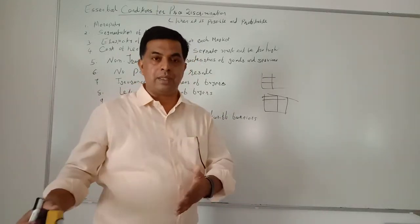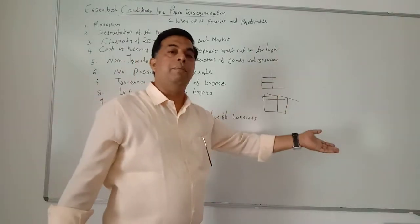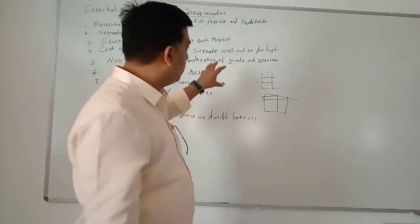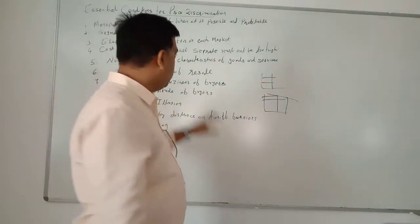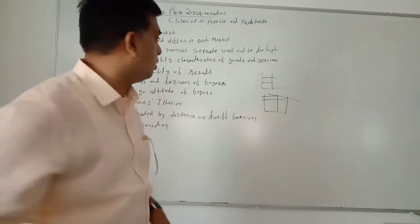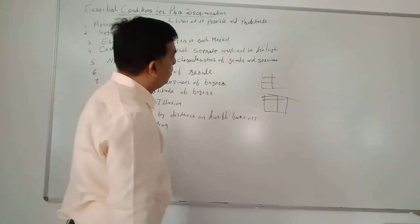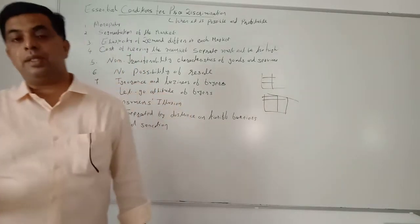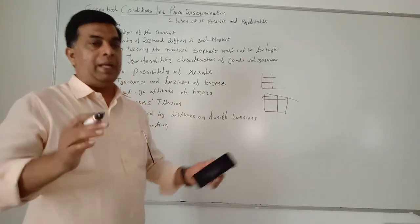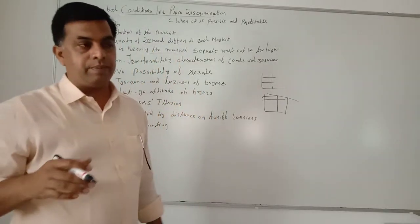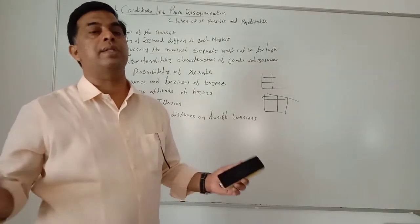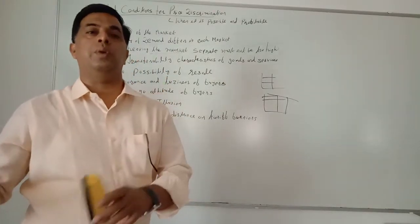Price discrimination is only possible when elasticity is different in different markets. If elasticity is the same, price discrimination is not possible. The fourth condition: the cost of keeping the markets separate must not be too high. This is a situation where price discrimination is possible but may not be profitable. For example, if a cinema house has incurred a huge cost by creating separate market segments — royal class, marble class, executive class — the cost may outweigh the benefit.